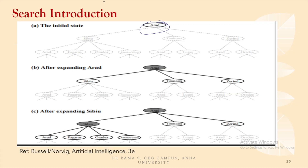Now we will go through the details of the search-based agent. The first search we will cover is breadth-first search. As an example taken from Russell and Norvig, this is a map of Romania. Starting from a place called Arad, there are three branches going to different places. The search proceeds by expanding Arad, then expanding its children such as Sibiu, moving through the state space.